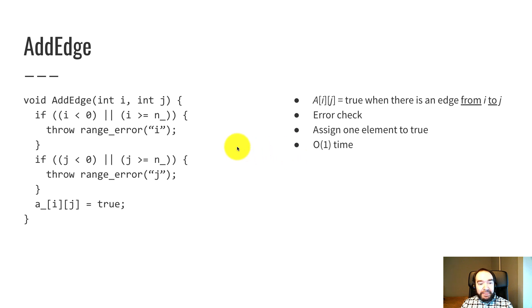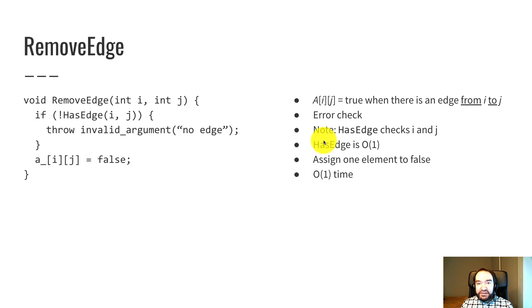Adding an edge is also pretty simple. So we have the same error checking. Once we get past the error checking, we just say a[i][j] equals true. So we set that element to true. That's constant time.